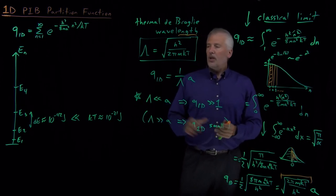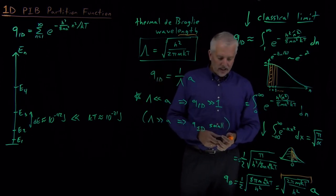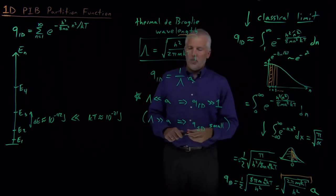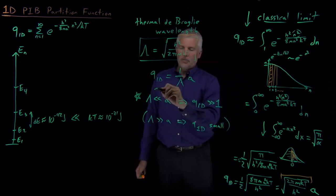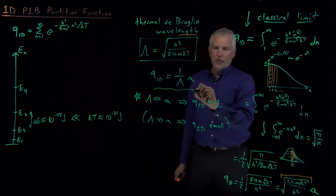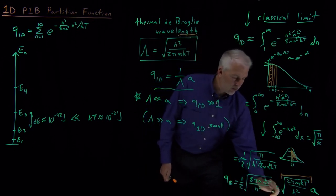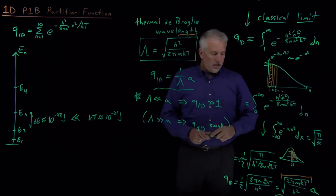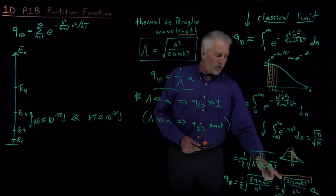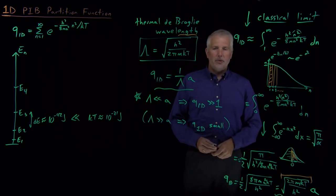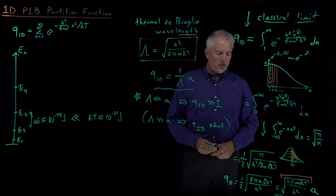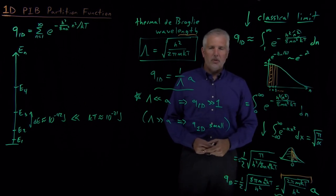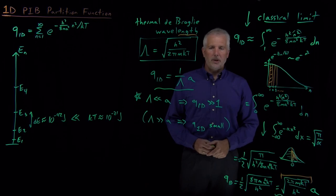So we've succeeded in computing the one-dimensional particle-in-a-box partition function, whether we write it using the thermal de Broglie wavelength or the more explicit formula. Our next step is to combine those 1D partition functions to learn about the three-dimensional particle-in-a-box partition function.